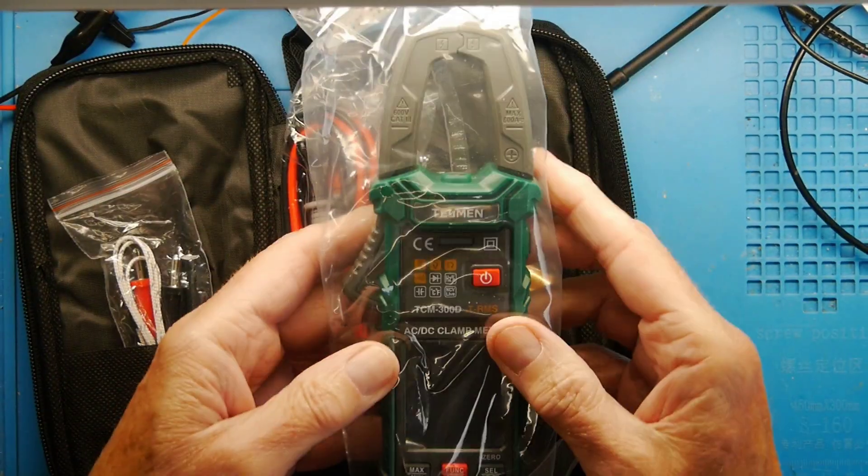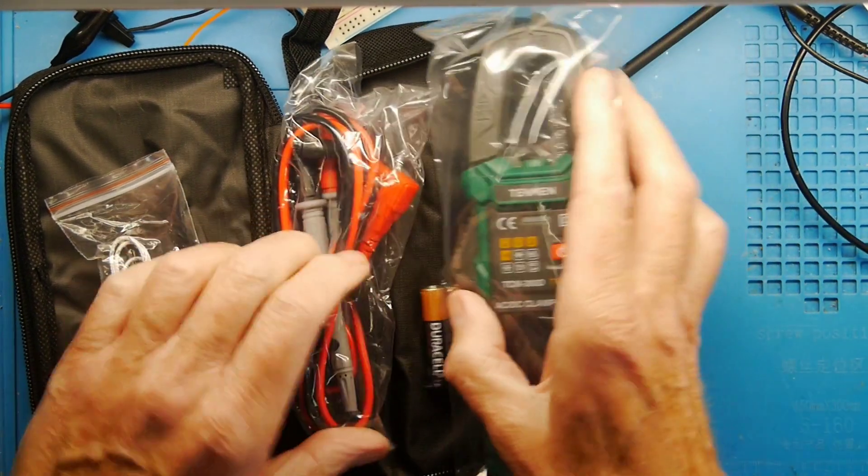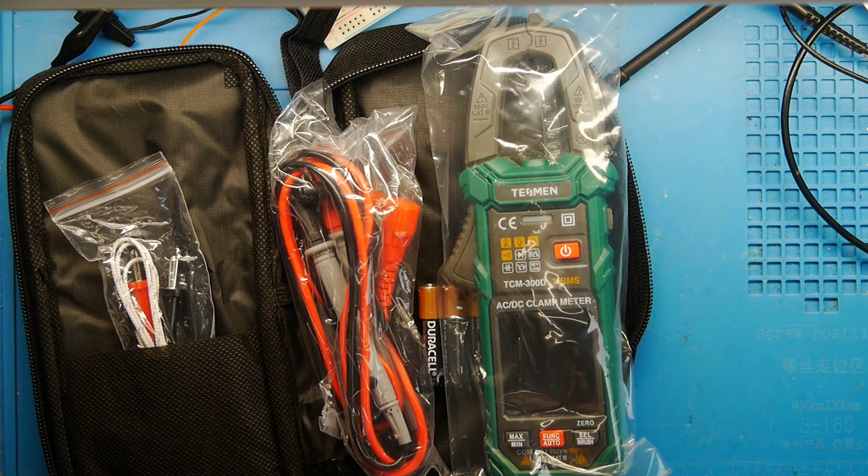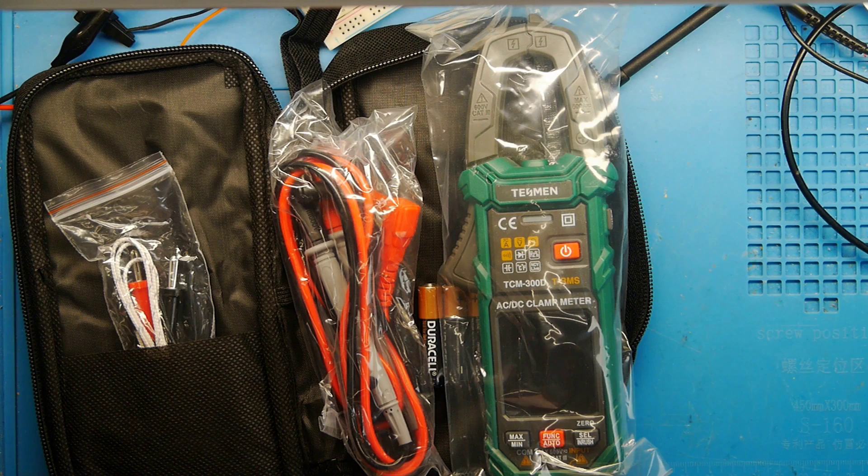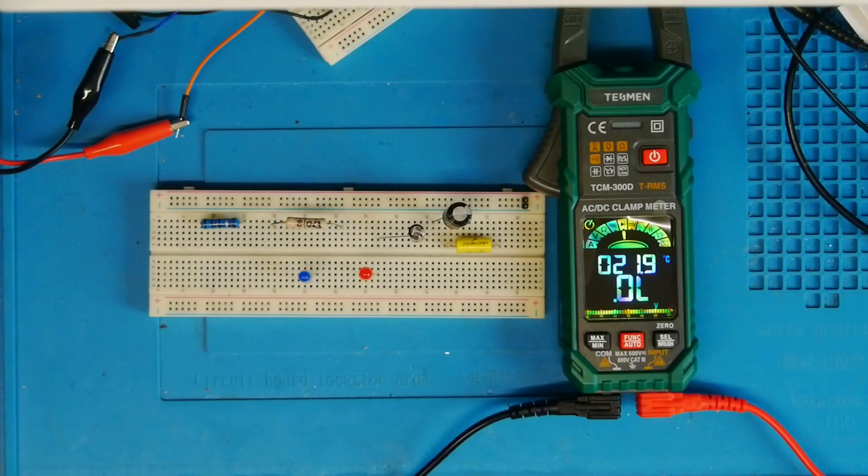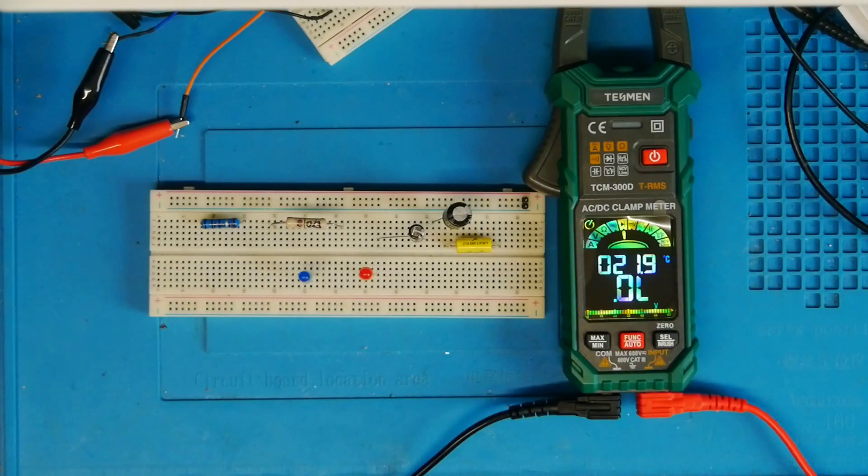The meter is in a sealed plastic bag. Looks like we need a screwdriver to fit the batteries, so I'm going to go ahead, connect up, get the batteries in, and then we'll have a look at some of the features. Here's the meter, battery's in, powered up. You can see the display there, it's reasonably clear.